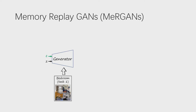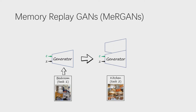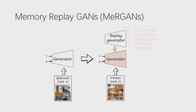To address the problem of catastrophic forgetting in image generation, we propose Memory Play GANs, or MaGANs, which prevents forgetting by replaying images from previous tasks via a Replay Generator. The Replay Generator is simply a copy of the generator made before starting to learn a new task. Its weights are frozen, so learning a new task cannot cause forgetting in the Replay Generator.